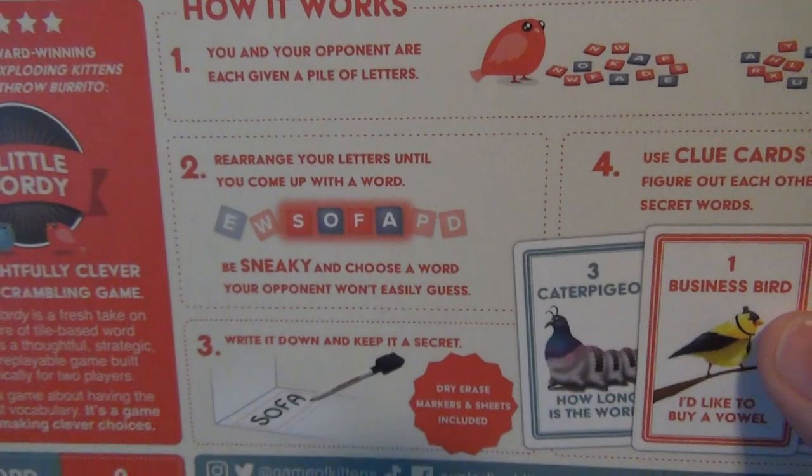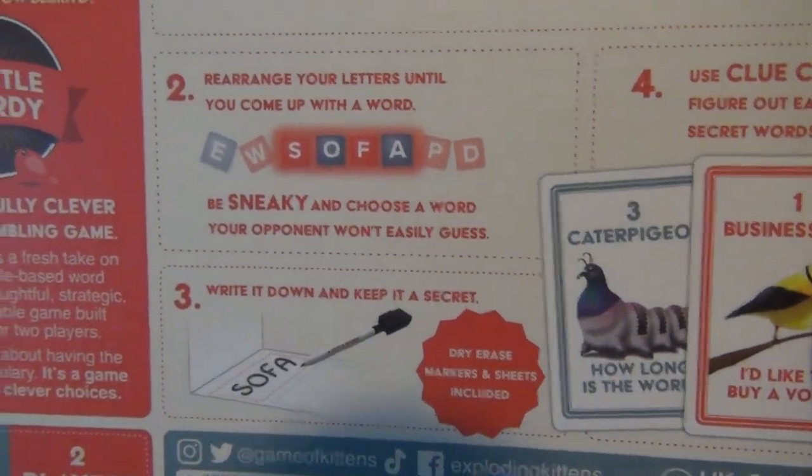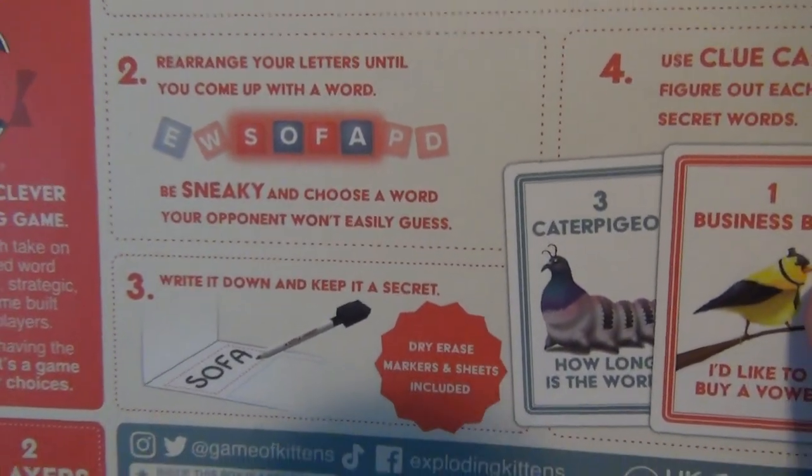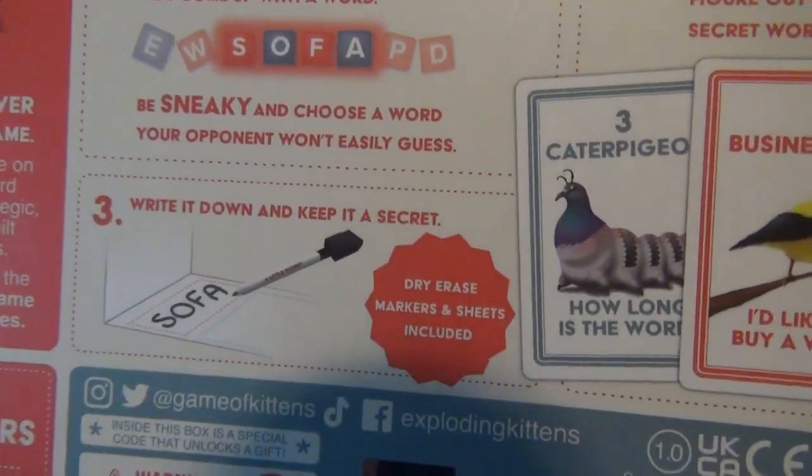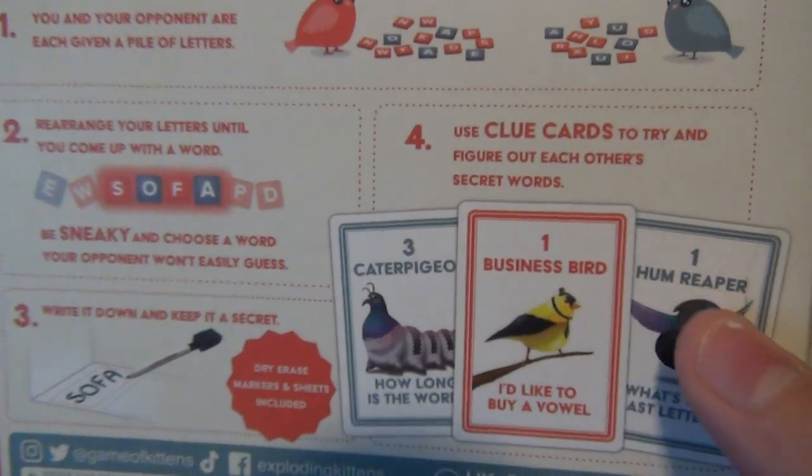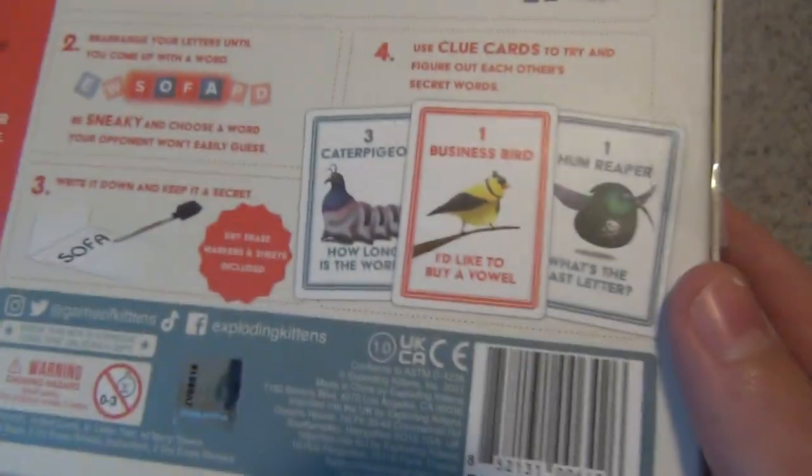Okay, so how it works. You and your opponent are each given a pile of letters. Rearrange your letters until you come up with a word. Be sneaky and choose a word your opponent won't easily guess. Write it down and keep it a secret. Dry erase markers and sheets included. Use clue cards to try and figure out each other's secret words.